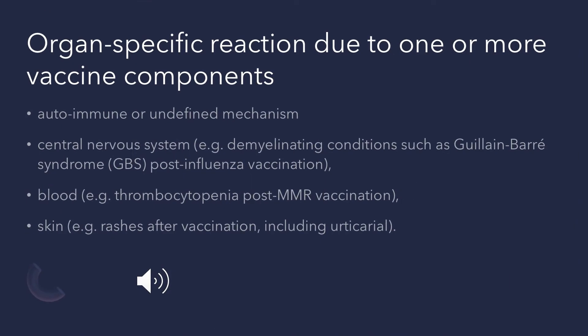The next type are organ-specific reactions due to vaccine components. These may be autoimmune reactions or have an unknown underlying mechanism. One example is demyelination, such as Guillain-Barré syndrome, where the nervous system is affected after influenza vaccination. After MMR vaccination, thrombocytopenia can occur as an adverse reaction, affecting the blood. Some vaccinations may also develop skin rashes and hypersensitivity reactions, affecting the skin.